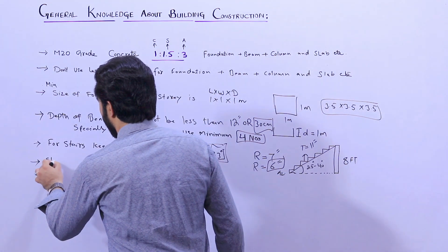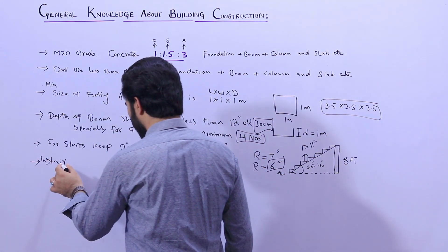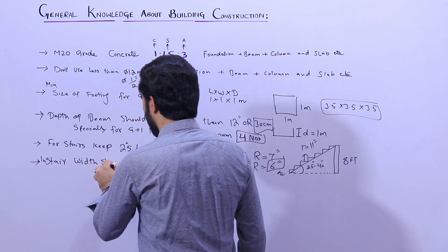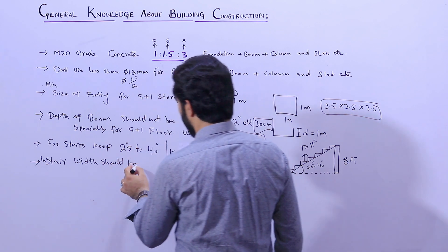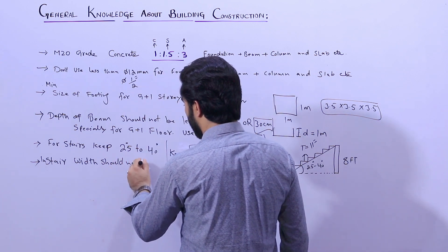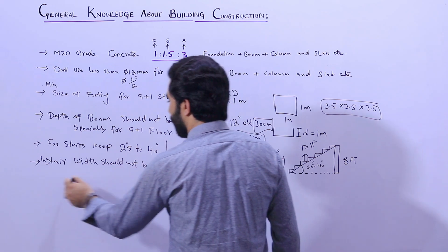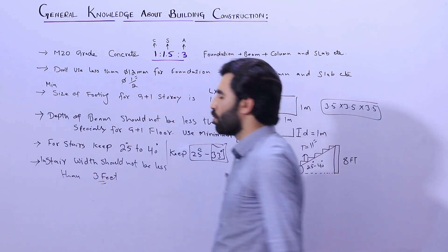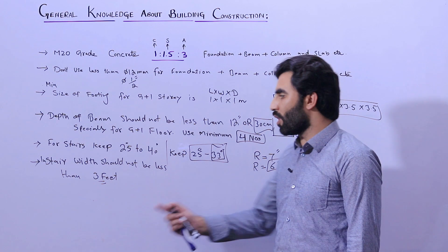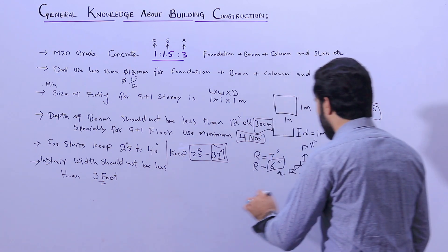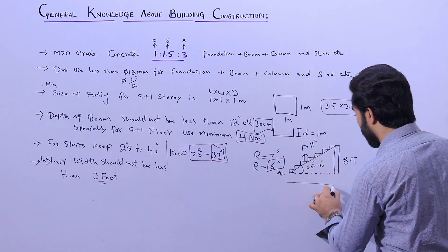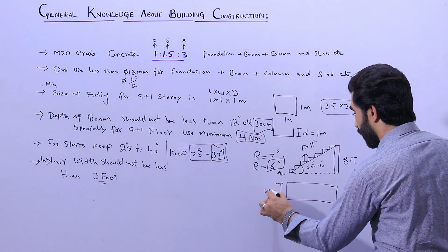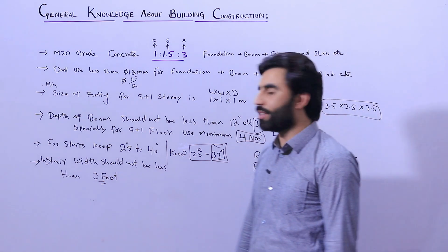The sixth point is for stairs: the width of the stairs should not be less than three feet, otherwise you will face problems going to the first or second floor. As you can see in the plan view, this is called the width of the staircase. It should not be less than three feet for a normal residential building.